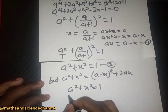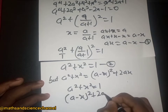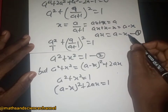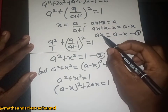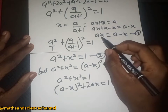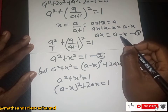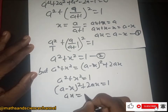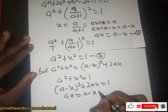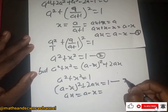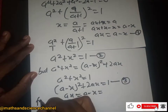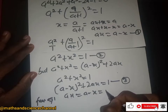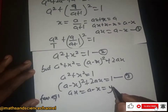We have (a minus x) squared plus 2ax being equal to one. From equation one, a minus x equals ax, and ax also equals a minus x. Let's call this equation three. We now set a minus x equal to a new variable y.